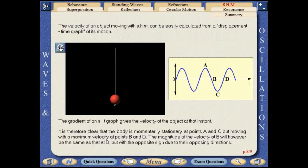The magnitude of the velocity at B will however be the same as that at D but with the opposite sign due to their opposing directions.